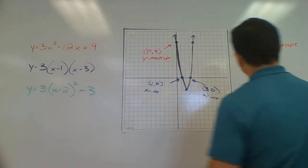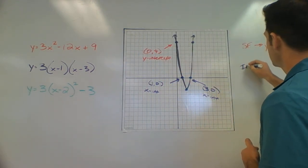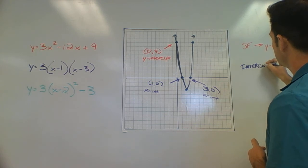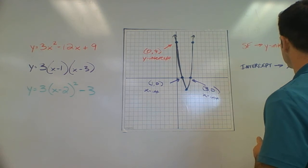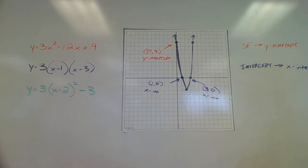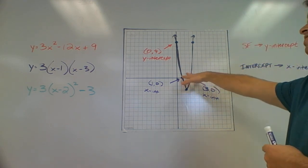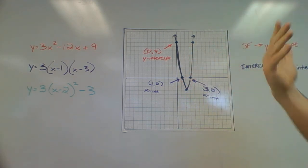So again, in intercept form, it's very simple for us to see the x-intercepts. Very easy for us to get the x-intercepts there. So we know we could get a bunch of different things from this. Like I could find the middle of those two x-intercepts and figure out the axis of symmetry, plug in different numbers. But I use the intercept form to get the x-intercepts very simply.